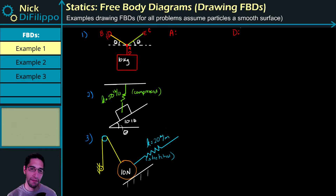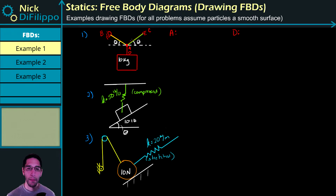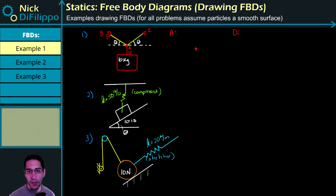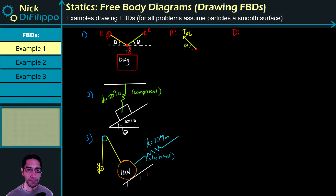Let's do point A first. What is acting on point A? We have three tension forces — all we have are three pieces of cable or rope coming into point A. They are massless so they don't have weight, but ropes can only support tension. So we have one force that goes this way and we'll call it T_AB because it points from A to B, and there is some angle theta. We have another rope that goes this way, T_AC, since it goes from point A to point C.